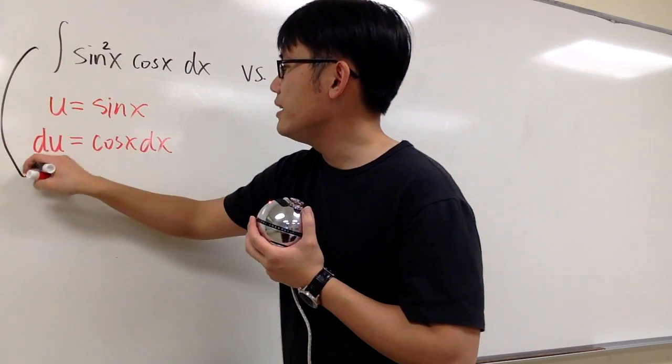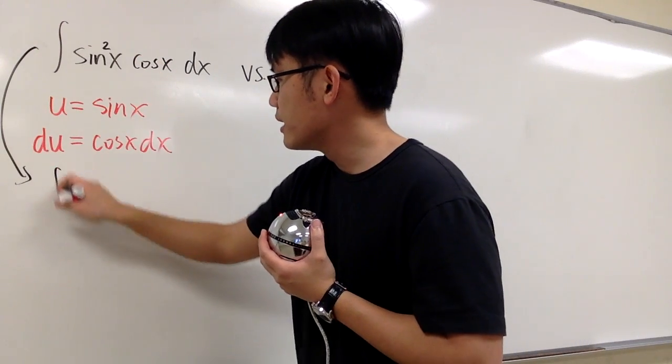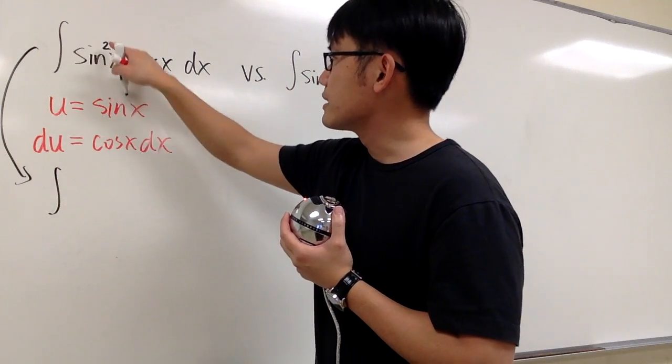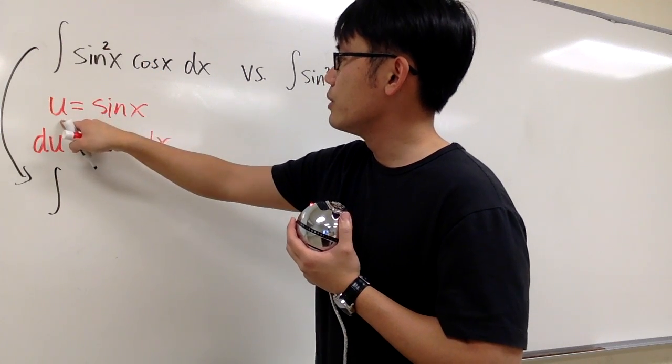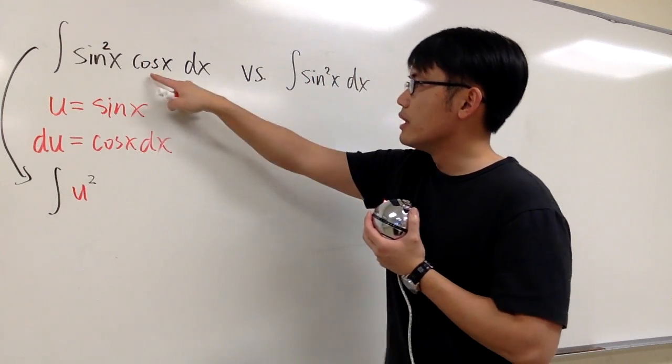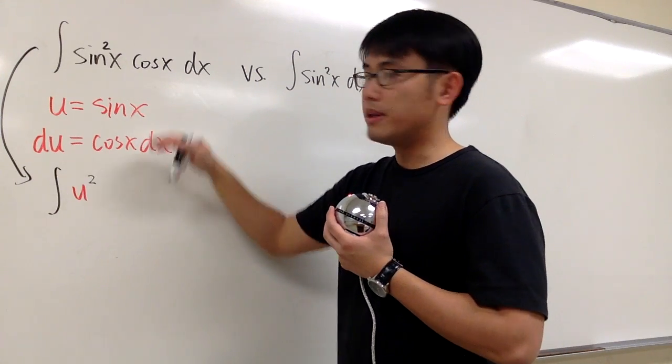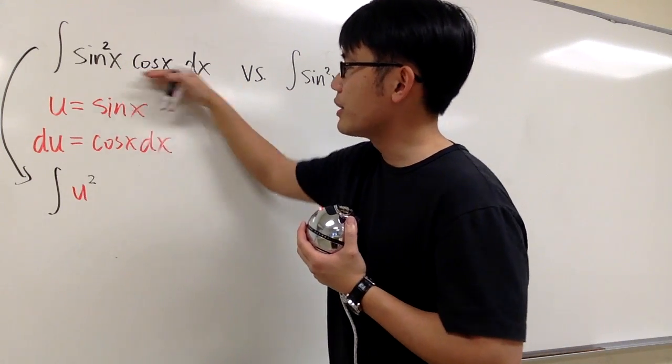And then I can immediately take this integral into the u world. So we are going to get the integral sine squared, which is going to be u. So we have u to the second power. And then this part, cosine x dx, and that's exactly the same as du. So we can replace the whole thing right here with du.